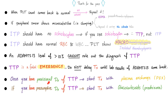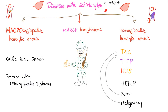What diseases have schistocytes? First, it could be an artifact. Also, macroangiopathic hemolytic anemia — such as calcific aortic stenosis, prosthetic valve, or march hemoglobinuria. Microangiopathic hemolytic anemia — such as DIC, TTP, HUS. Sepsis and malignancy can also lead to DIC.